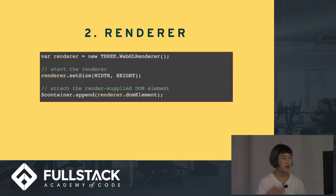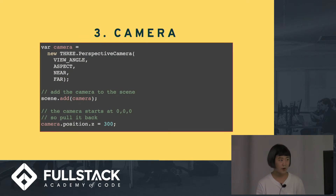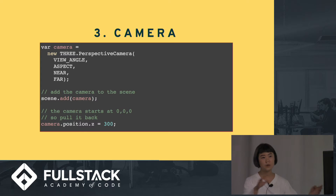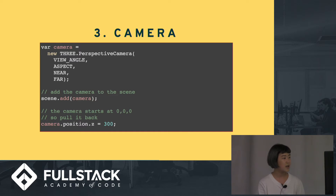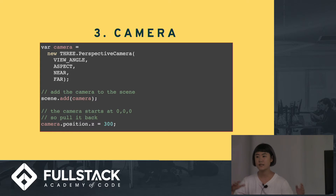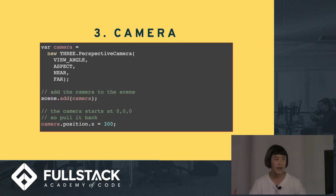Then you need your renderer — you also have to append your renderer to the container. You need a camera, and there are very different options for cameras so you can have it from different perspectives for different scenes. You can use a perspective camera or an orthographic camera, and it really changes the user experience. And you'll see this a lot: scene.add(camera) or scene.add(object) — you have to remember to add every object or camera to the scene in order for it to show up.